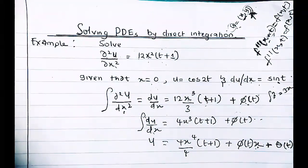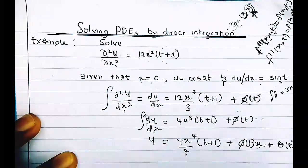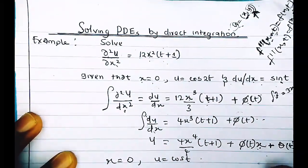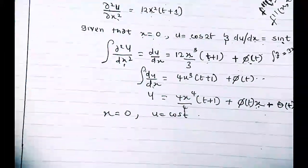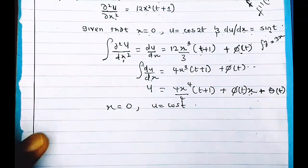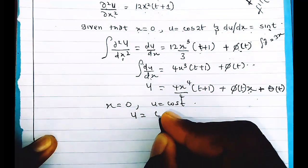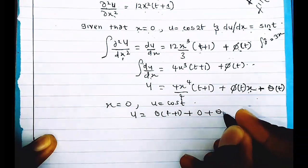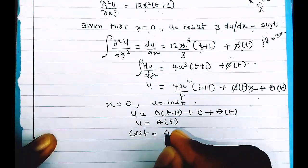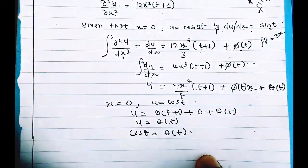Now we apply the first condition: when x = 0, u = cos(t). Substituting x = 0 into the equation, all terms with x vanish, leaving u = φ(t). Since u = cos(t), we get φ(t) = cos(t). We have now found the value of the second constant.